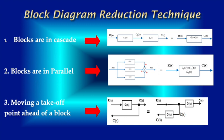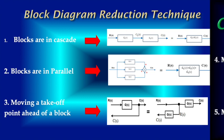Moving a take-off point ahead of a block: The signal is C(s), and C(s) equals R(s) into G(s). If this point is moved before the block, then this input is only R(s). If we multiply by G(s), then we get C(s) equal to R(s) into G(s). Remember always, this signal is always the same, wherever you move this take-off point.